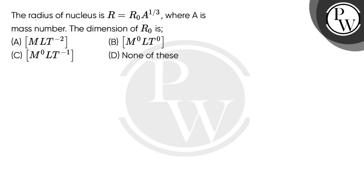Let's read the question. The radius of a nucleus is R equals R₀A to the power 1 by 3, where A is mass number. The dimensions of R₀ is. So given is the radius of nucleus relationship R equals R₀A to the power 1 by 3.